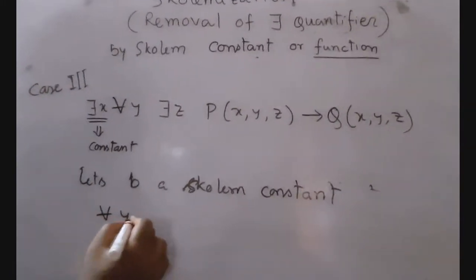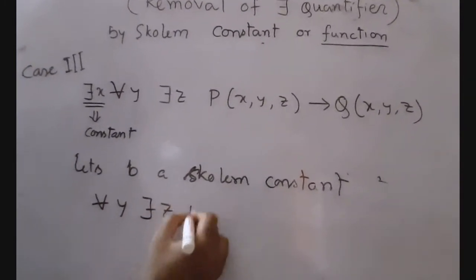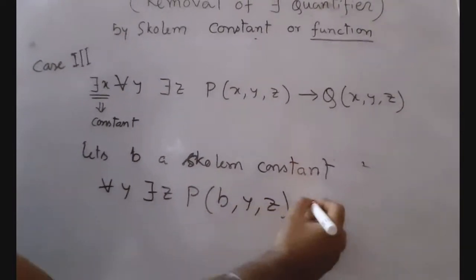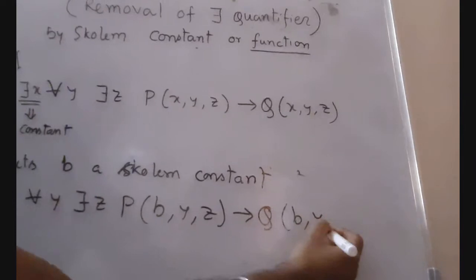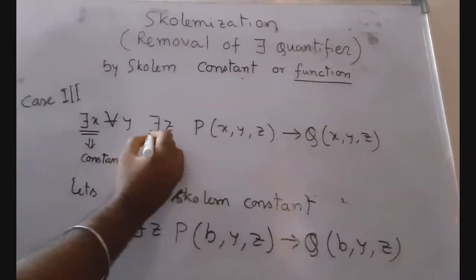So we can write: for all Y, there exists Z, P(B, Y, Z) implies Q(B, Y, Z). Till now...